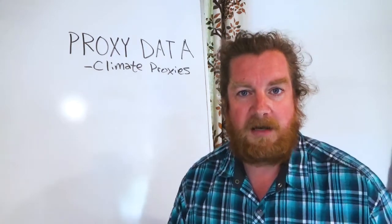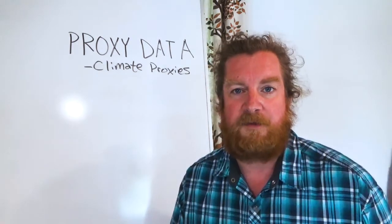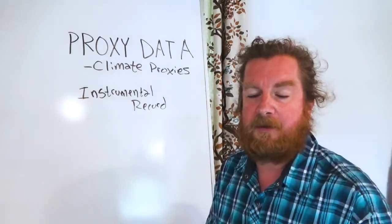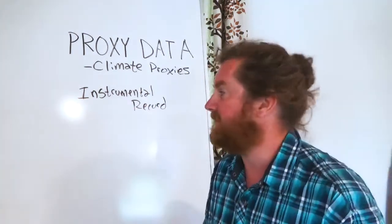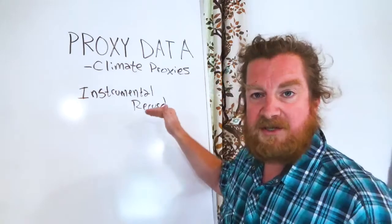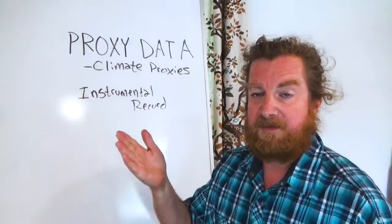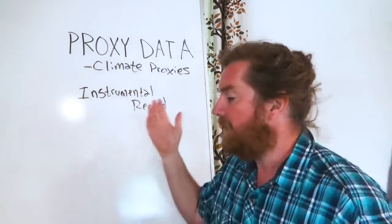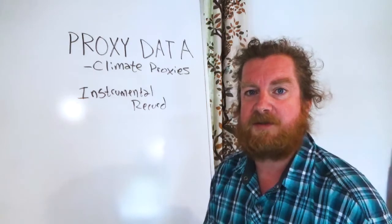There are actually quite a few different proxies that we use to establish climate science. But let's stop and think about why we have to use them. Climate is really a couple of things — temperature, precipitation, and all the different variations thereof. We measure those with instruments. We have ways to measure precipitation and all sorts of variables in the current climate, particularly temperature. That is what we call the instrumental record — direct measurements of the climate.